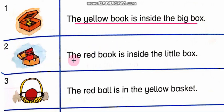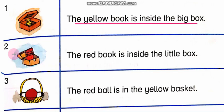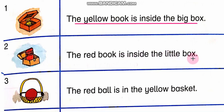In the second picture: The red book is inside the little box. Yeh box little hai — little mean chota. Yianni ki yeh box little hai, aur iske andar red book hai. The red book is inside the little box. Red book little box ke andar hai.